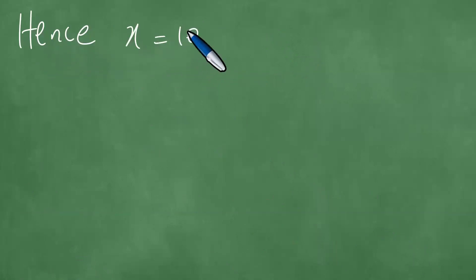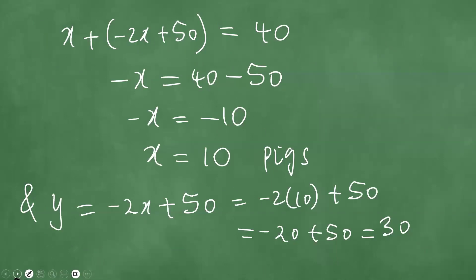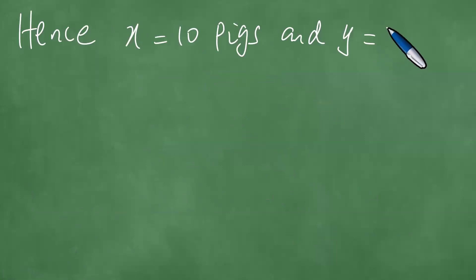Hence, X equals 10 pigs and Y equals 30 chickens. And so this is the answer to the question and we've solved this in detail.